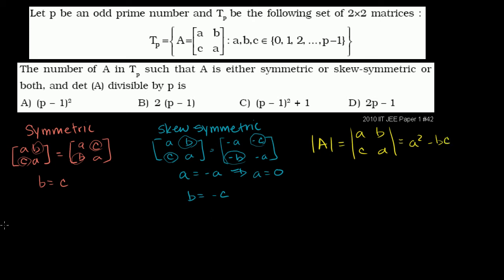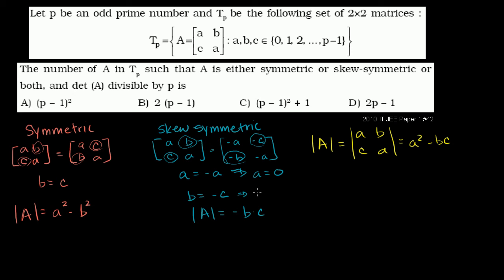In the symmetric case, the determinant equals A squared minus B times C. Since B equals C, that becomes A squared minus B squared. In the skew symmetric case, A equals 0, so A squared is 0, and the determinant is minus B times C. Since C equals negative B, that becomes minus B times negative B, which equals B squared.